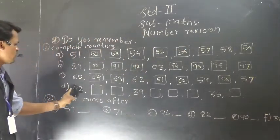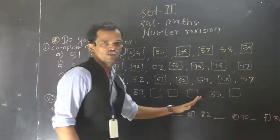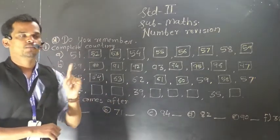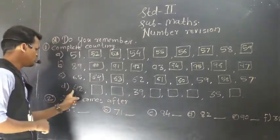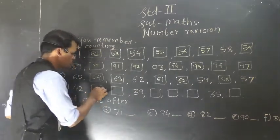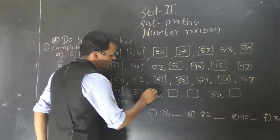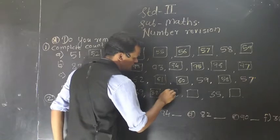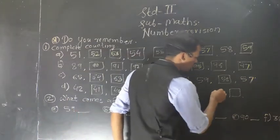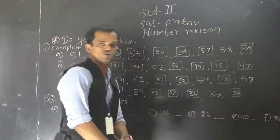Then next: 42, here 39, here 35. Here also the number is becoming small every time, so this is also backward counting. So before 42: 41, then 40, 39, 38, 37, 36, 35, and 34. Understood.